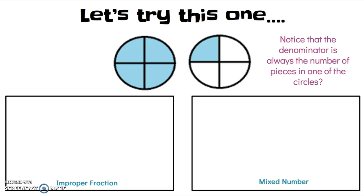So, let's look at this one. If you were going to write this particular fraction as an improper fraction, you would write 5 fourths because there are 1, 2, 3, 4, 5 shaded pieces and each pie has 1, 2, 3, 4. So, that's our denominator, the total pieces of our pie and 5 is the number that's shaded.